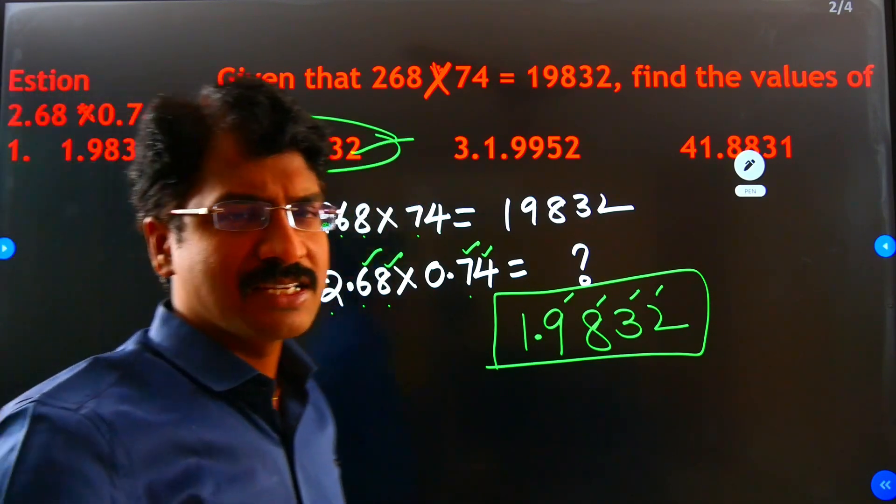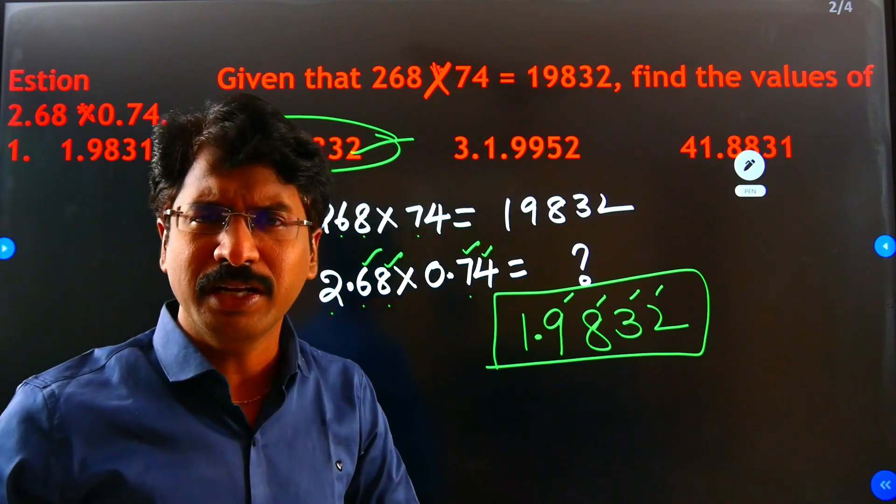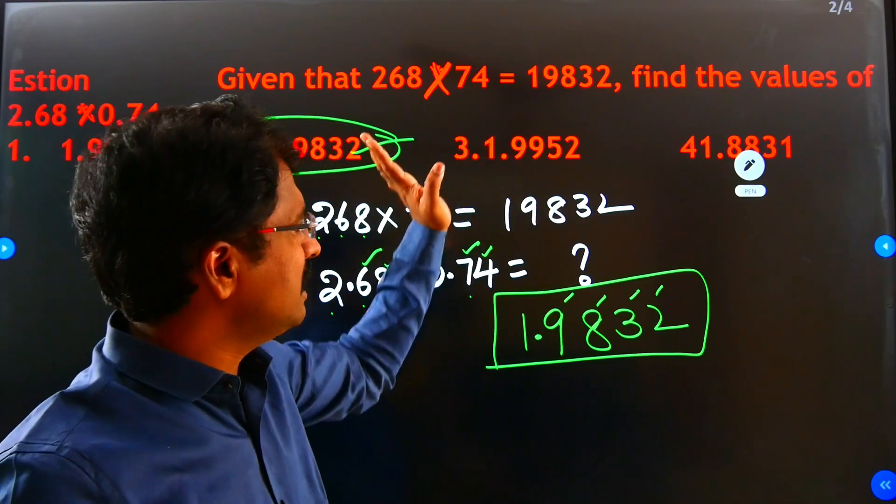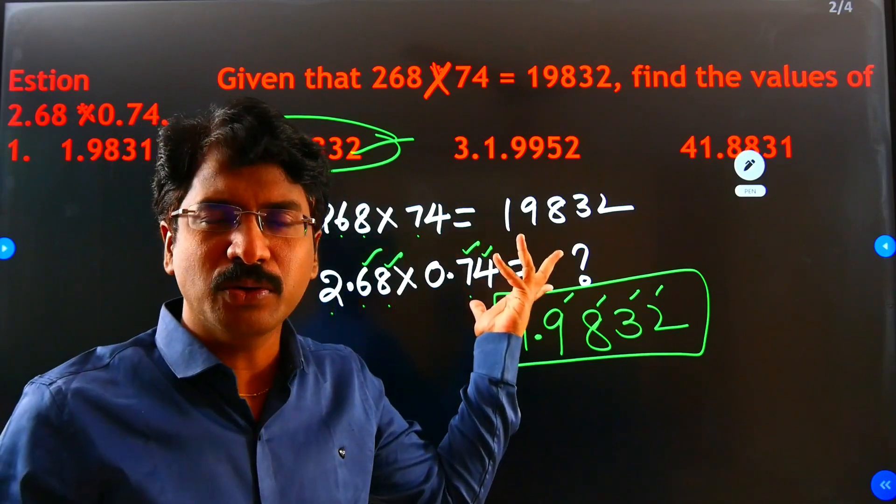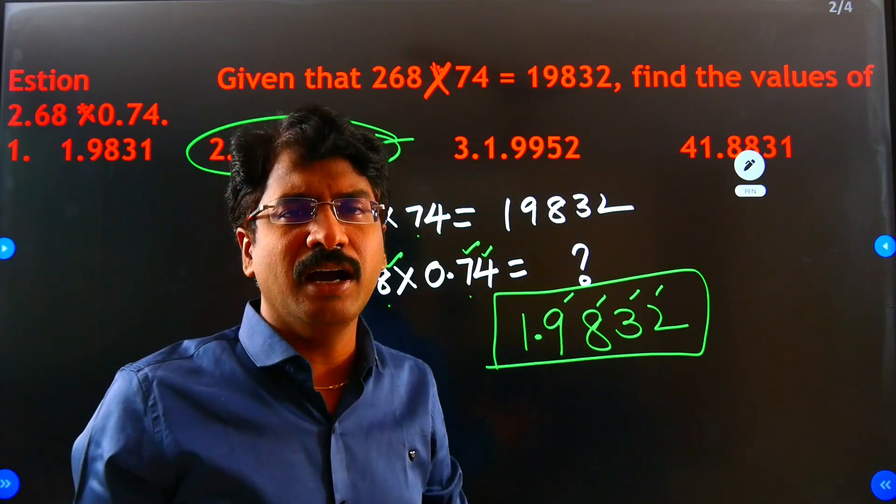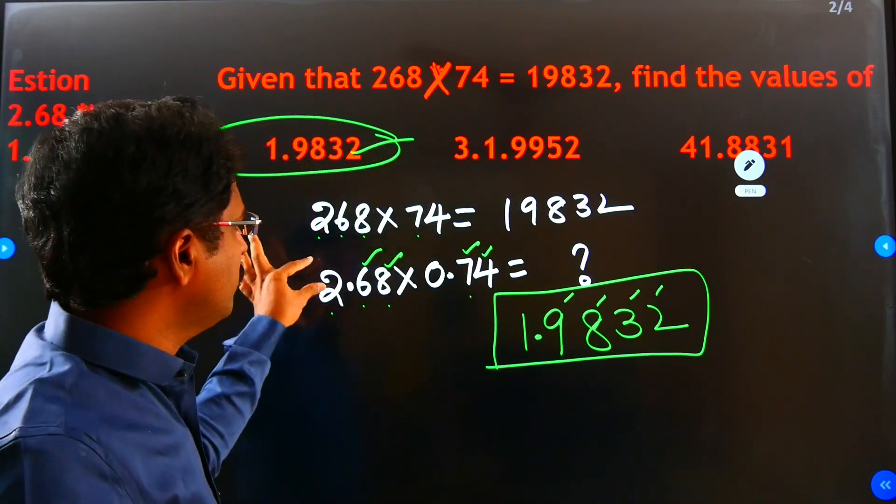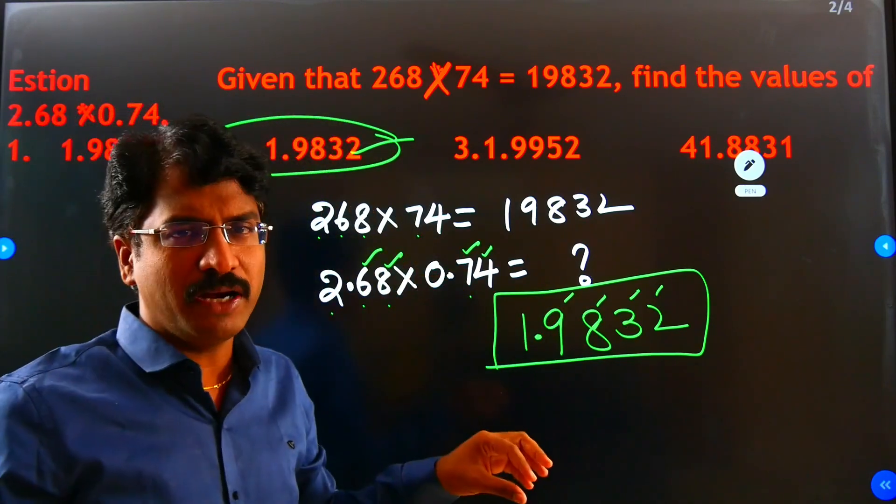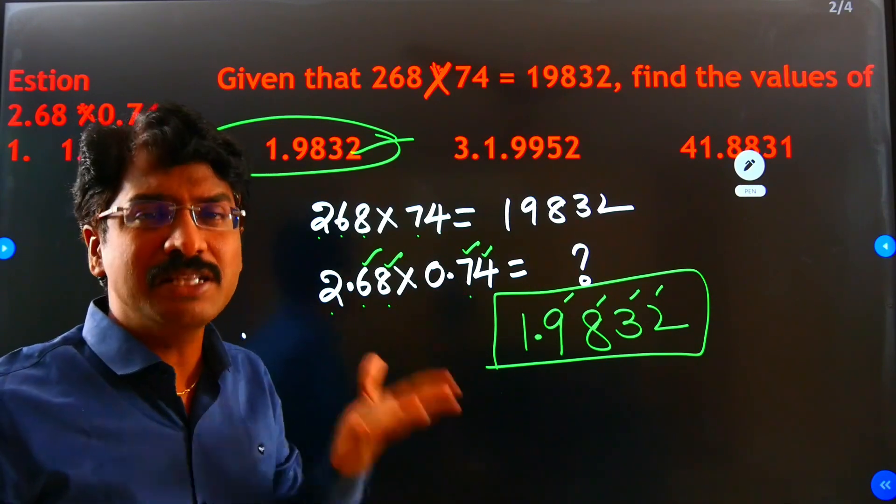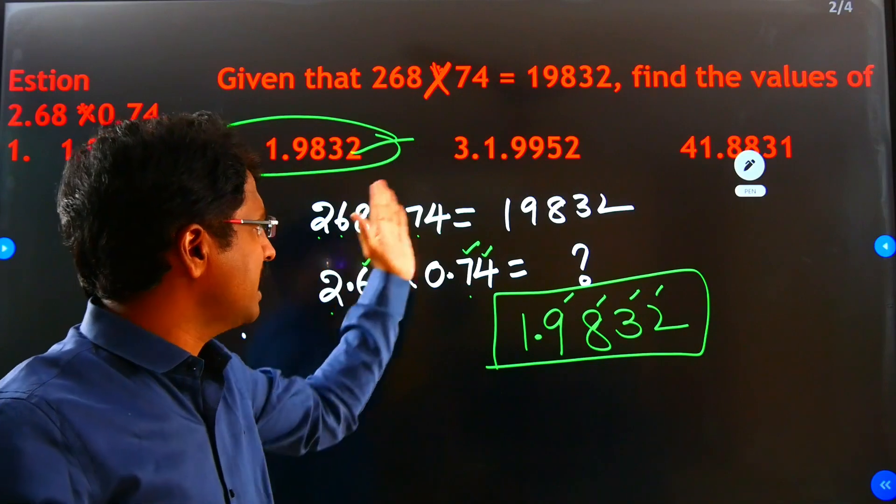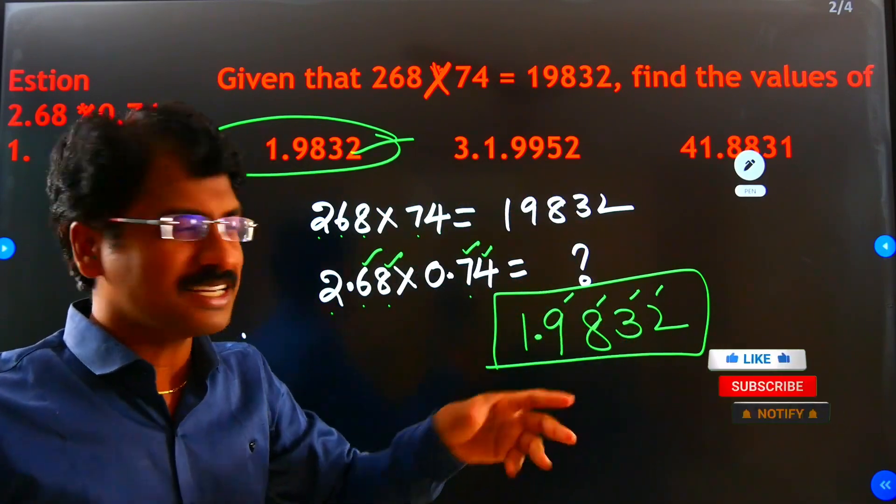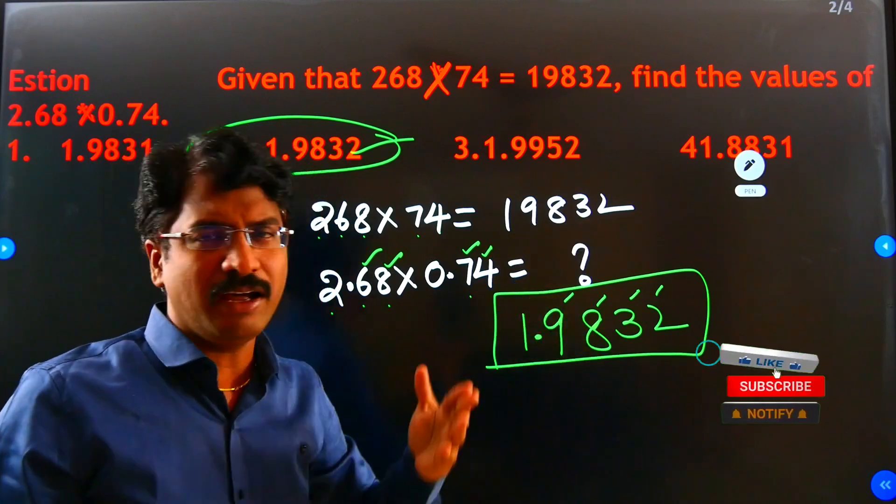So here, did we complete the multiplication? No. Why? Because there is a clue. They only multiplied 268 into 74, they only gave that result. Here they gave 2.68 into 0.74. What is the difference? There is no difference, only decimals are there. We just wrote the same answer. I did not do any multiplication. Same 19832 only I wrote here.